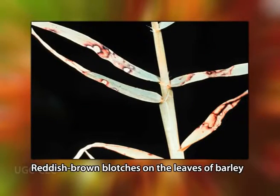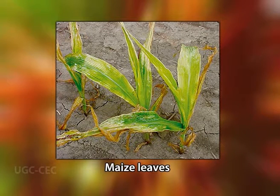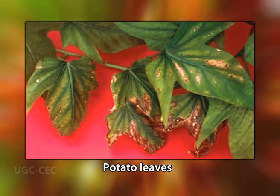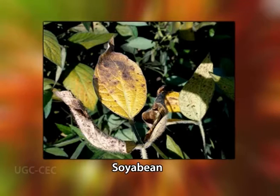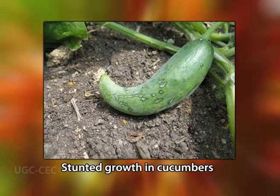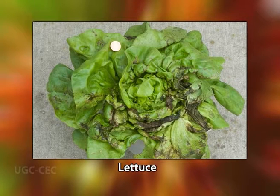Zinc toxicity symptoms include development of reddish-brown blotches on the leaves of barley, inhibition of growth, and development of chlorotic lesions on maize leaves. In potato, whole-plant chlorosis and development of necrotic lesions occur at the tips and margins of old leaves. In soybean, rolling of leaves occurs after developing red coloration in middle veins. Growth inhibition is also seen in cucumbers, tomatoes, and lettuce.